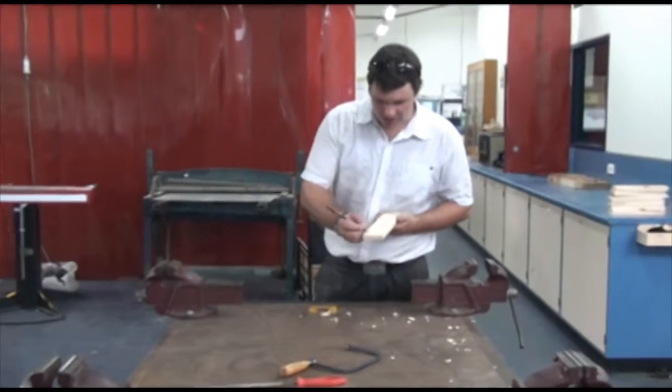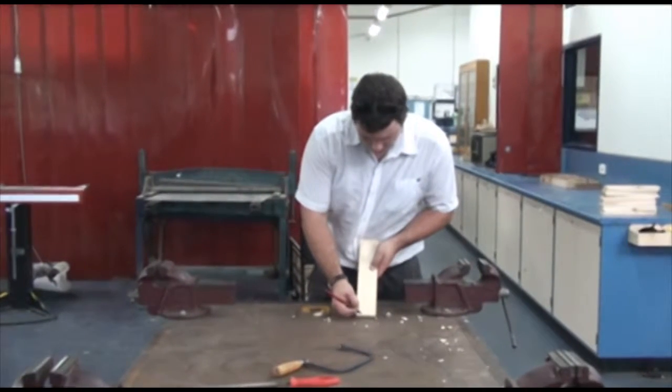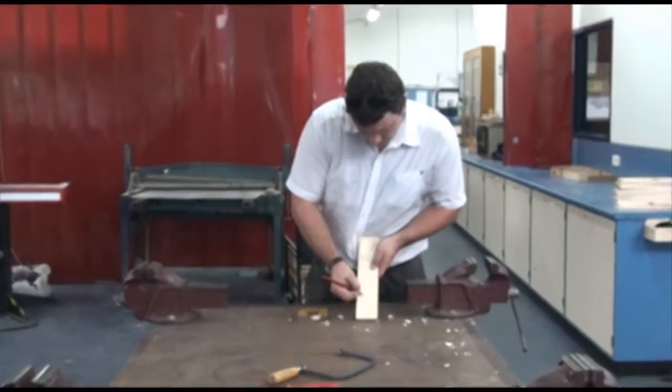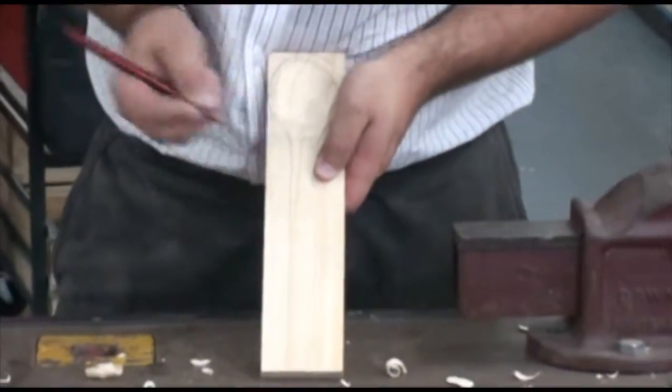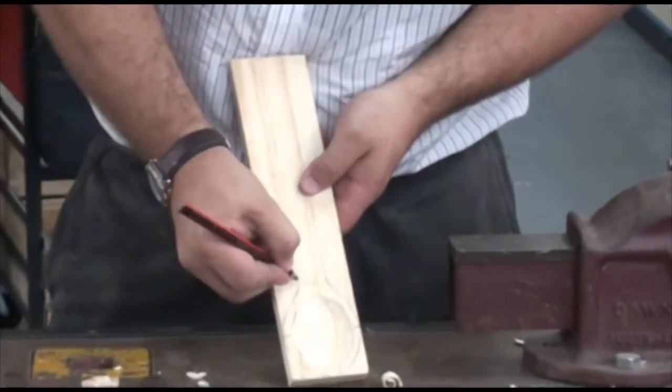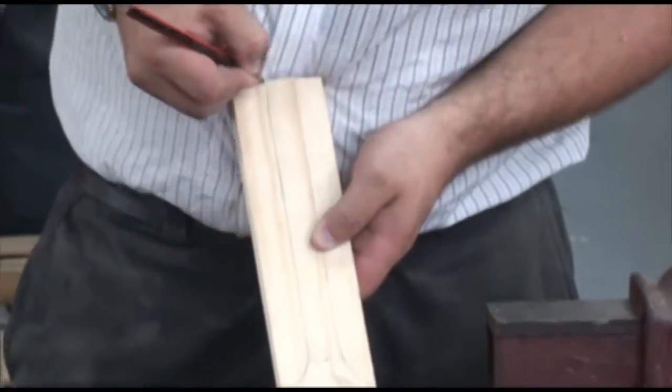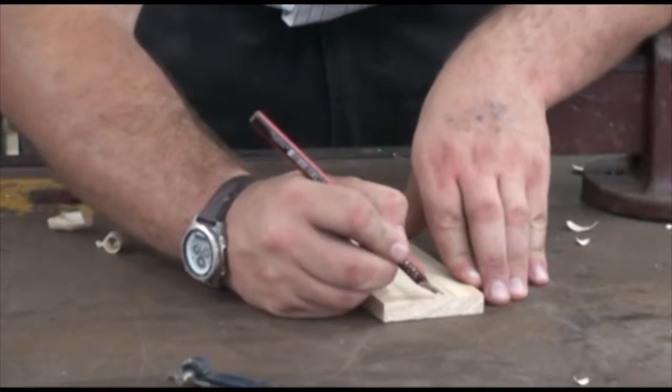Alright, now if the markings on the spoon are still clearly visible, that's good, but if they've rubbed off a little bit, you might want to redo them. And I might just round off the end of this spoon a little bit.